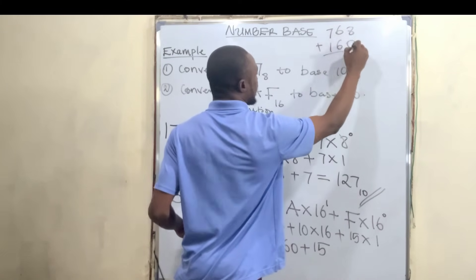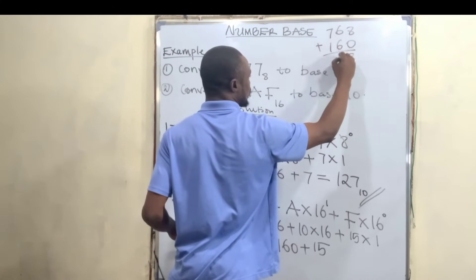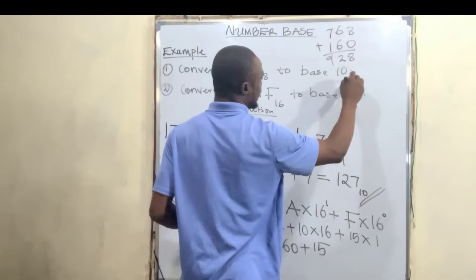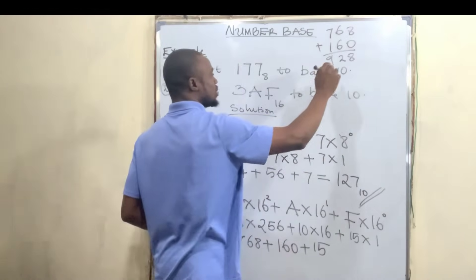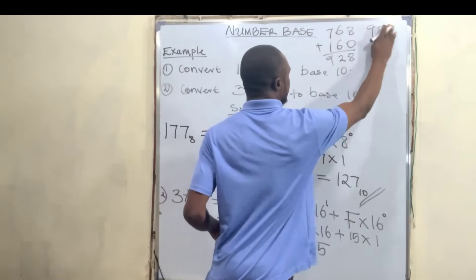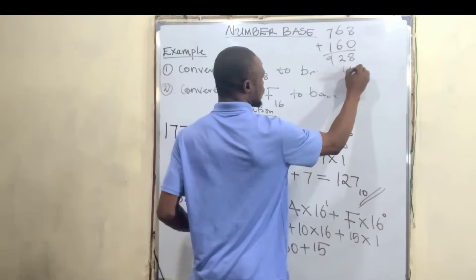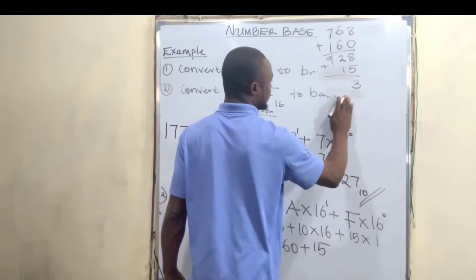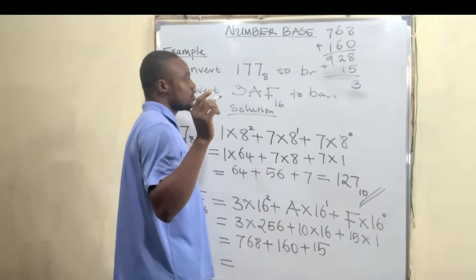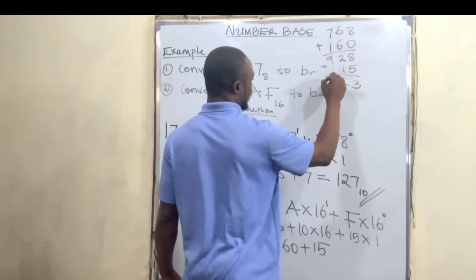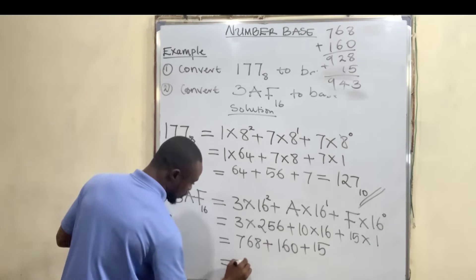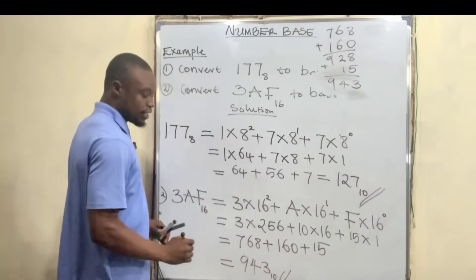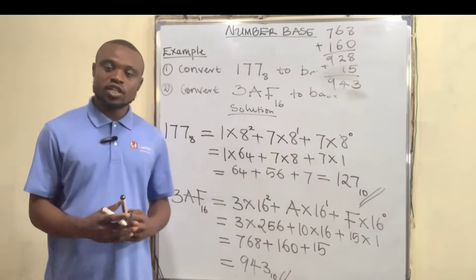Adding 768 plus 160: 8 plus 0 is 8, 6 plus 6 is 12, write 2 and carry 1, 1 plus 7 plus 1 is 9, giving us 928. Then 928 plus 15: 8 plus 5 is 13, write 3 and carry 1, 2 plus 1 plus 1 is 4, and 9 stays, giving us 943. So our answer is 943 in base 10. Thank you guys for watching, see you in the next video.